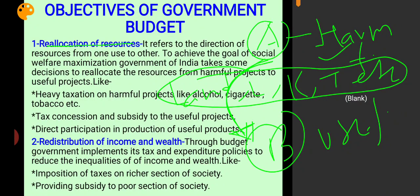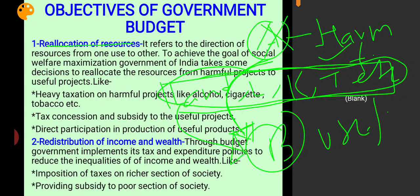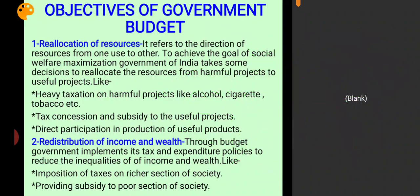The objective is to make production of harmful product A less profitable — or even cause losses — so that industry shuts down, factors of production and resources are released, and government of India can then utilize these resources in project B for producing a useful product. This way harmful production decreases and useful production increases, raising social welfare.